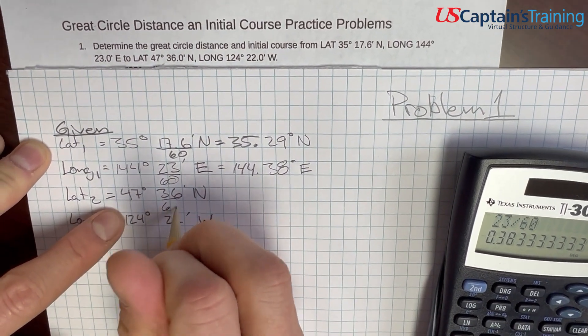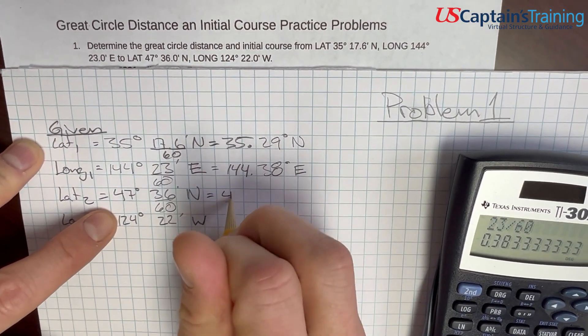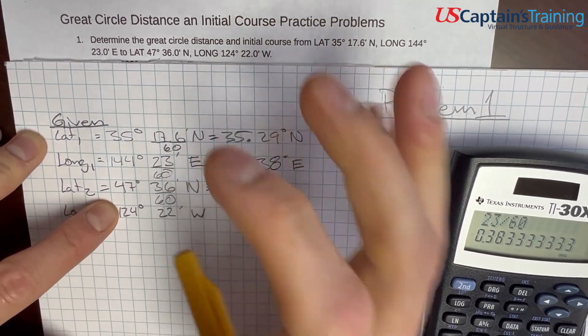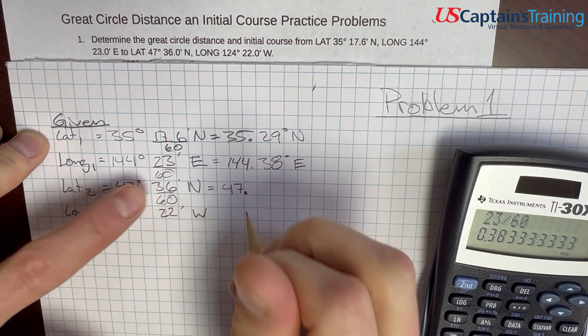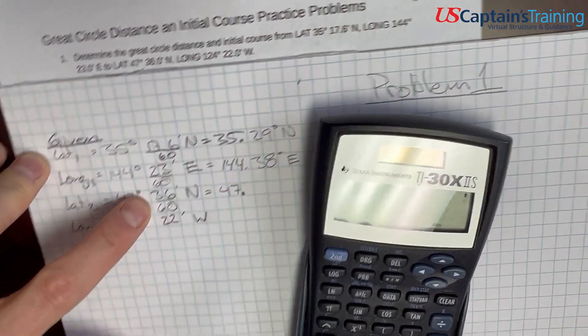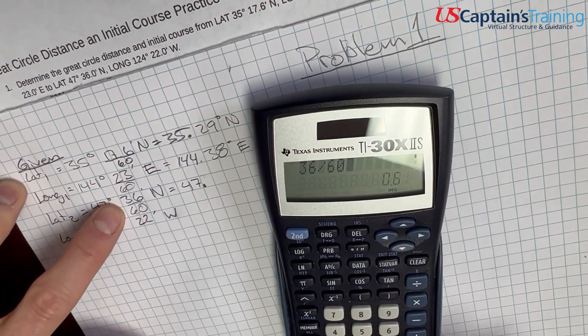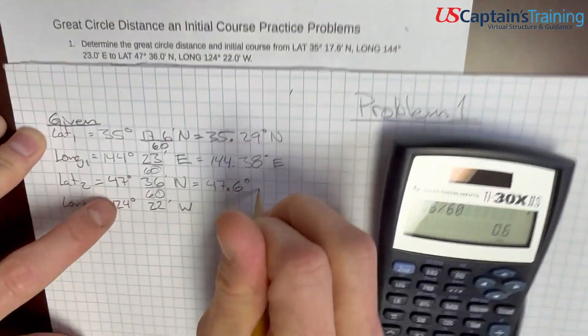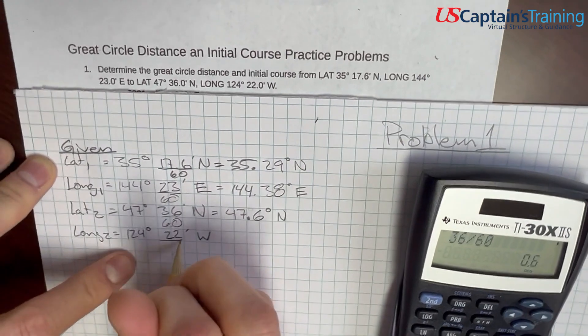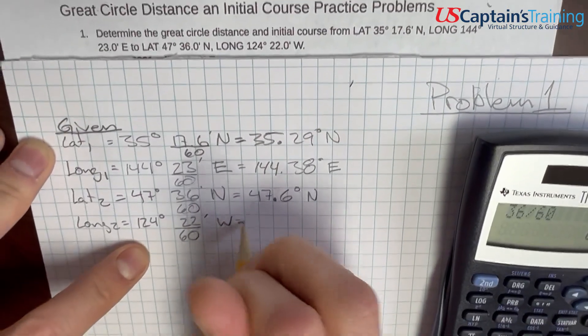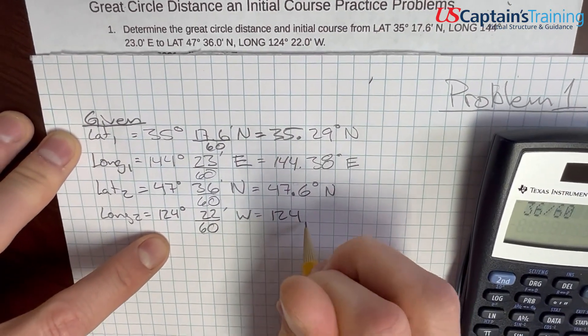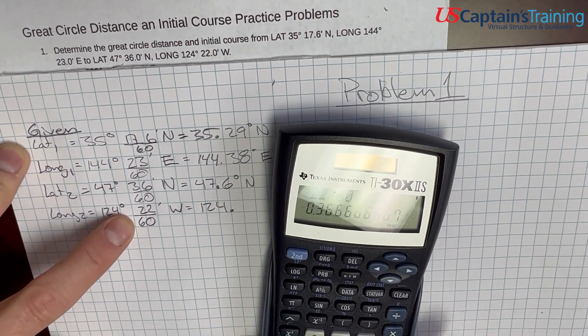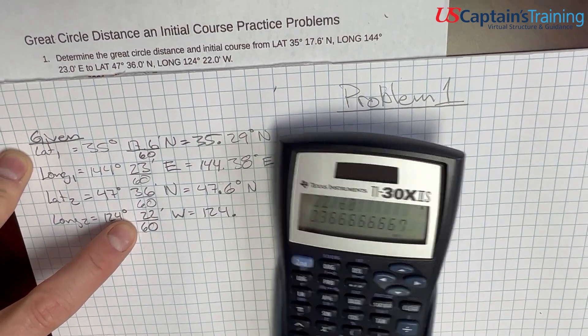We keep going. Lat 2, 36 divided by 60 equals 0.6, 47.6 degrees north. And now, divide this 22 by 60, and you'll get 124.37.